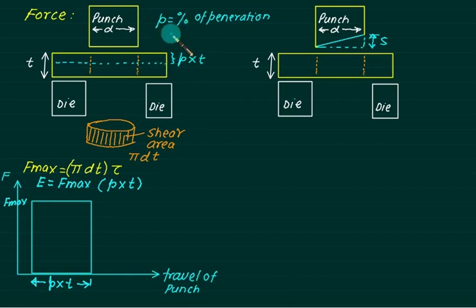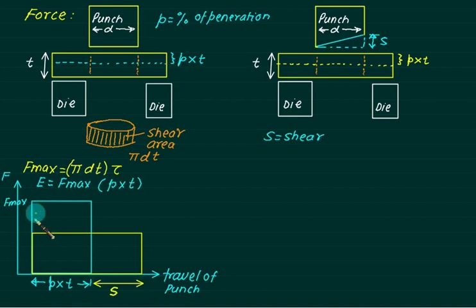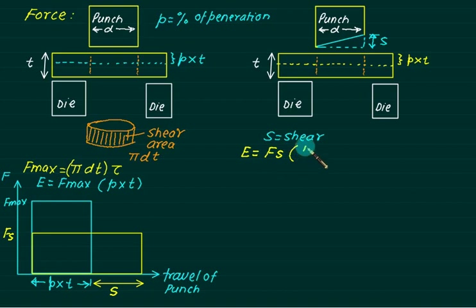When shear is provided on one side, the penetration length remains the same (p×t), but the punch must travel an additional distance equal to S + p×t. Because of this, the energy remains the same. The extra distance covered equals the shear S. Since the area under both graphs is the same, we can equate the energies.